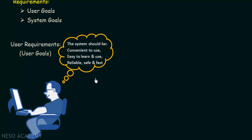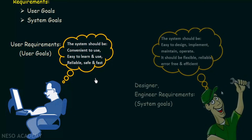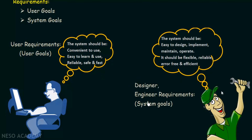System goals are the requirements from the designers or developers — what should be there in the system. The designer wants the system to be easy to design and implement, easy to maintain and operate, and it should be flexible, reliable, error-free, and efficient.